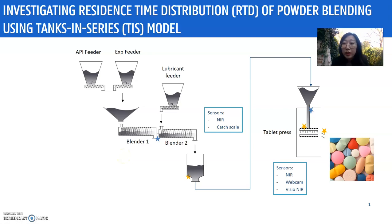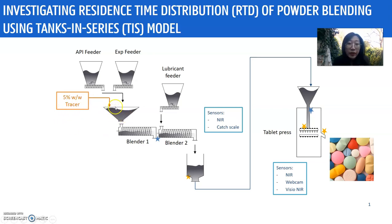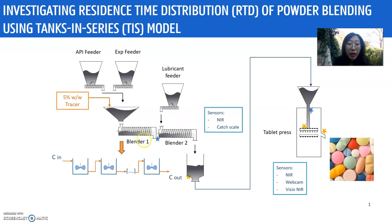To obtain the RTD, we performed several tracer experiments. First, we put the tracer before the blending step, then we detect the tracer fraction signal with an NIR sensor after the blending, so that we can get the RTD curve. Two models are used in the literature to fit the RTD curve: the tanks in series model and the tailored dispersion model.